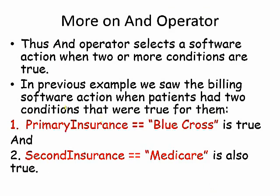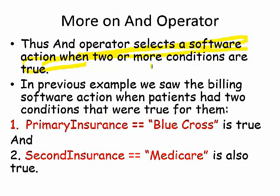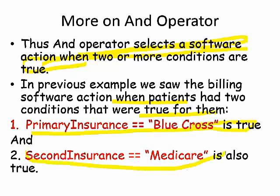The AND operator selects a software action when two or more conditions are true. In the previous example, the billing software action executed when the patient had two conditions that were both true: primary insurance equals Blue Cross (true) and second insurance equals Medicare (true). When both were true, we had two portions of the bill — bill one and bill two — and we add them up together.